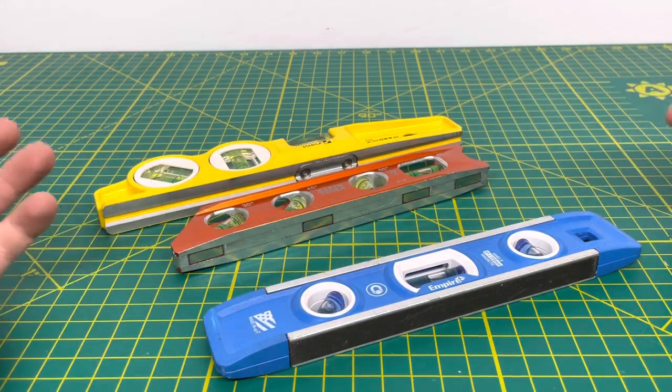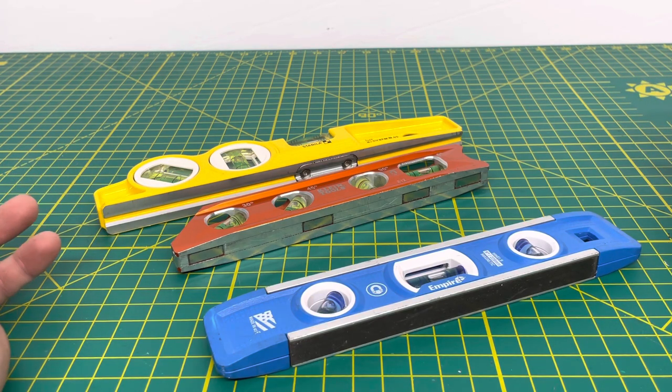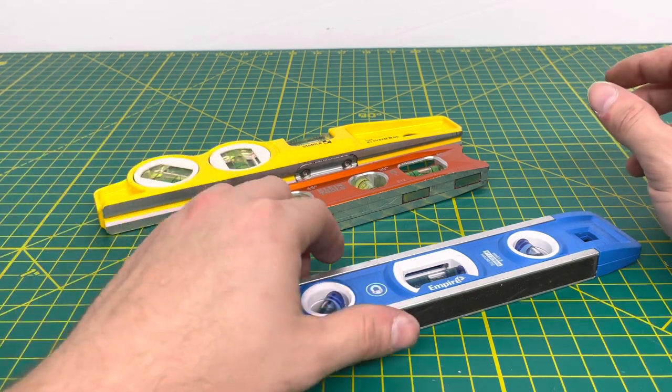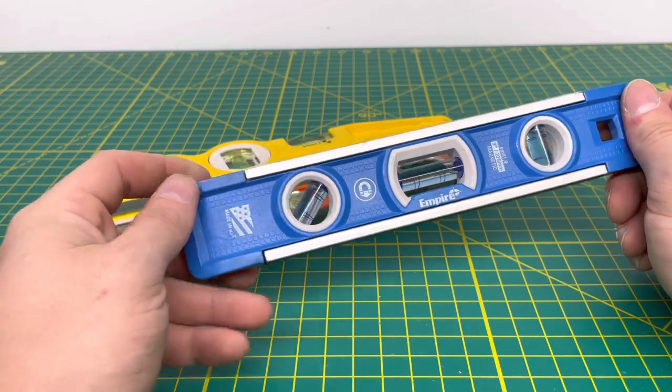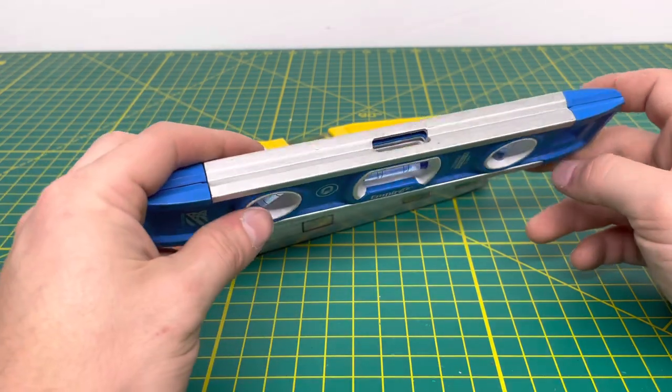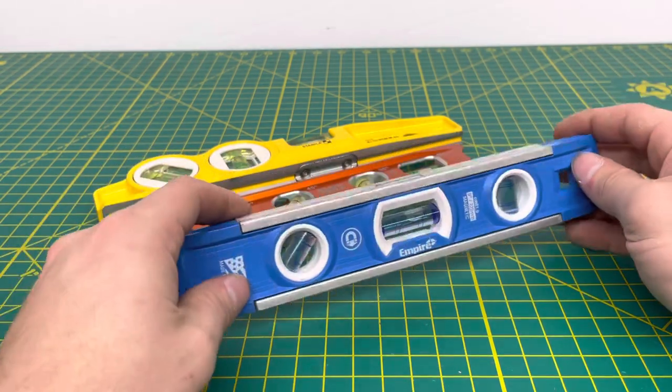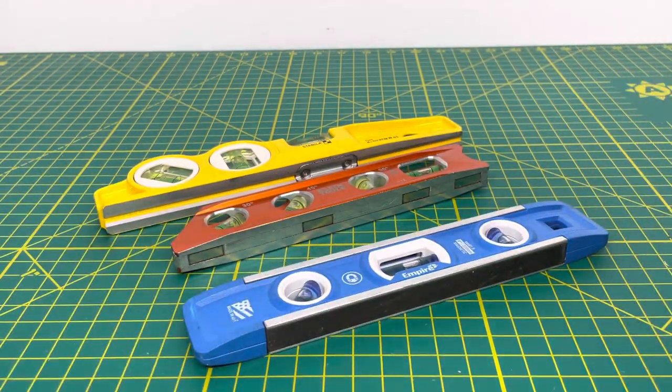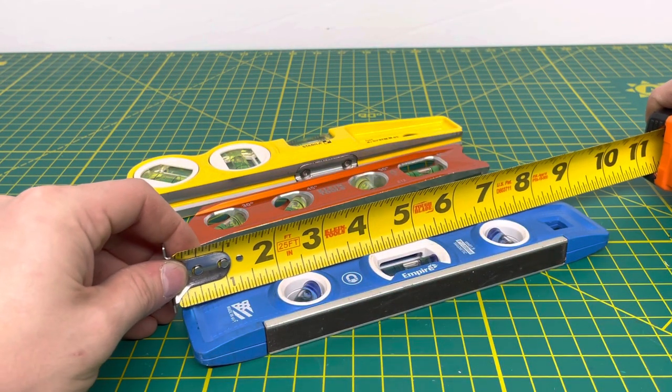When I first started in the trade, I didn't want to spend a lot of money on my tools and wasn't looking to break the bank. Most people are going to start off with a level that looks pretty similar to this. This is an Empire level made in the USA and it'll get the job done. Let's measure it out real quick. It's a 9-inch torpedo level.